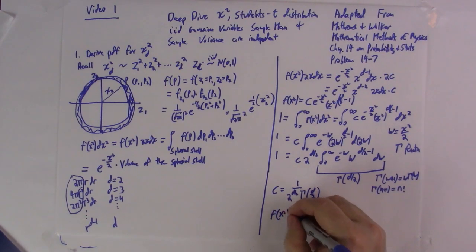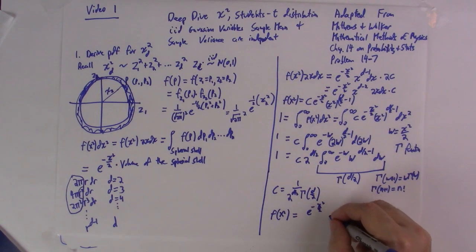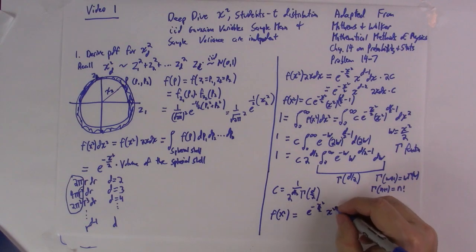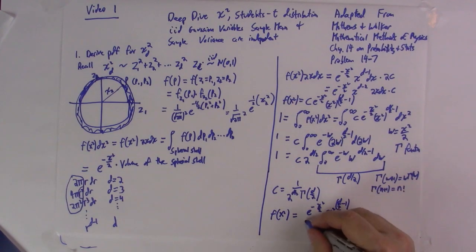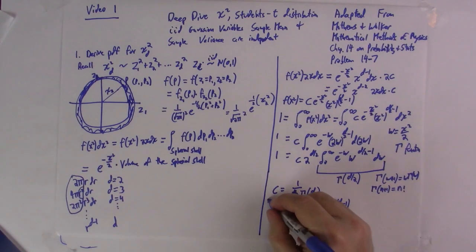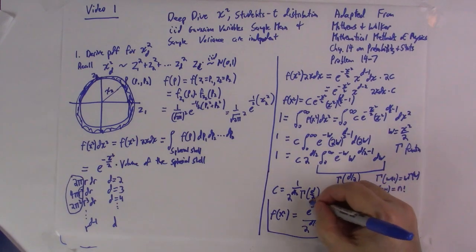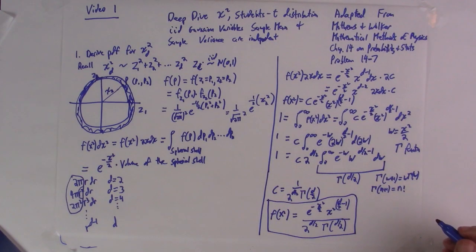And our final answer, the pdf for chi-squared is equal to e to the minus chi-squared over 2, chi-squared to the d over 2 minus 1 divided by 2 to the d over 2, gamma of d over 2. Hopefully, I didn't make any mistakes. And you can compare this with what was given in the lectures. So, I'll stop here on this video.